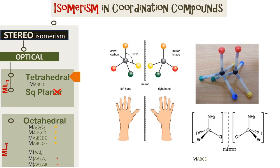We now look at optical isomerism. In tetrahedral structures of type M(A)(B)(C)(D), where A, B, C, and D are each different unique ligands, we find two isomers that are mirror images of each other, and a key condition is that these are not superimposable. So in tetrahedral structures, only for type M(A)(B)(C)(D) do we see optical isomerism, giving two optical isomers.